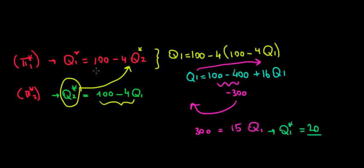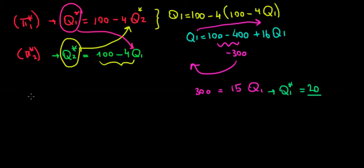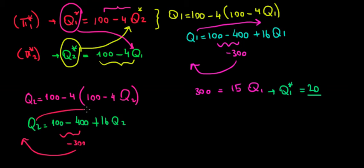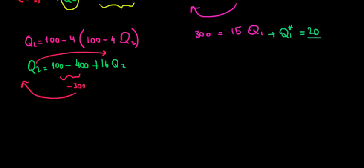Now let's do the same for Q2: substitute the first company's quantity into the second company's function. We have Q2 = 100 - 4 × Q1, where Q1 = 100 - 4Q2. Substituting: Q2 = 100 - 4(100 - 4Q2) = 100 - 400 + 16Q2. Rearranging: 300 = 15Q2. Dividing both sides by 15, Q2 = 20 units.